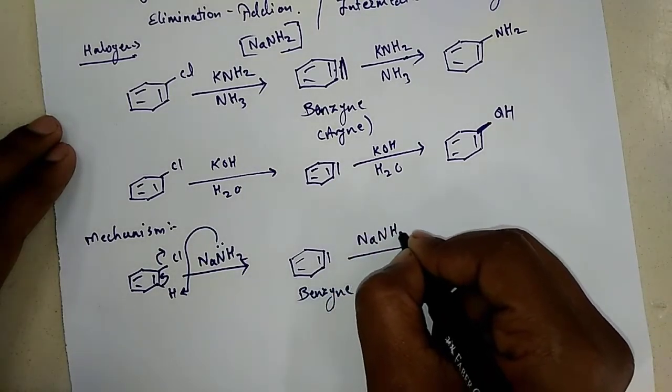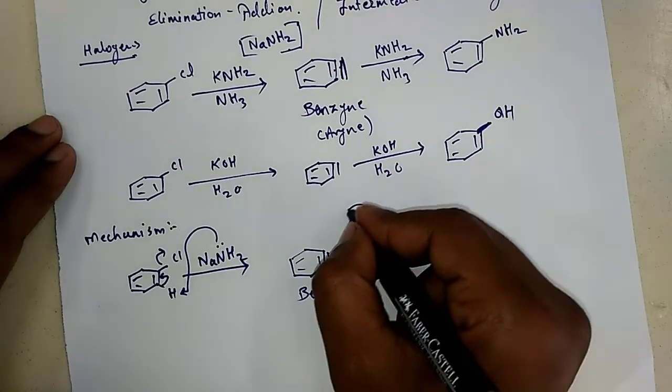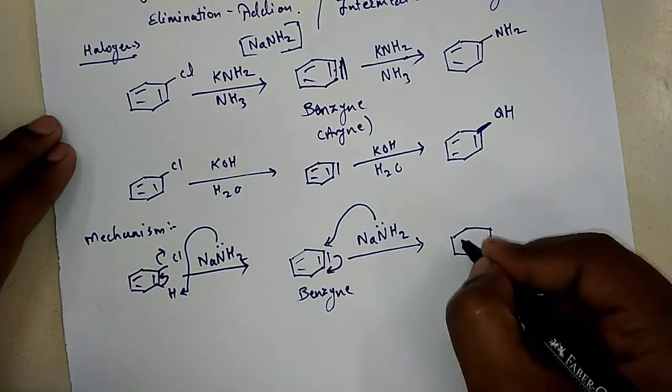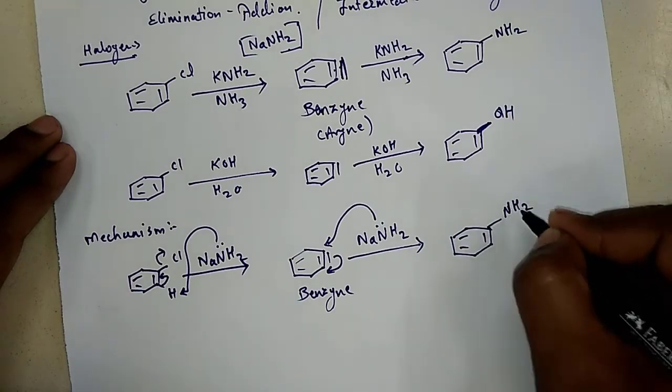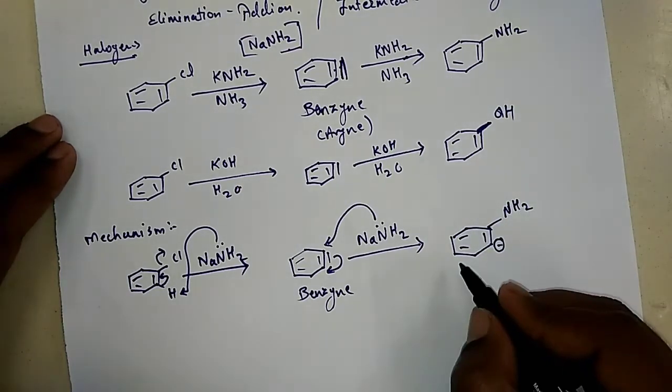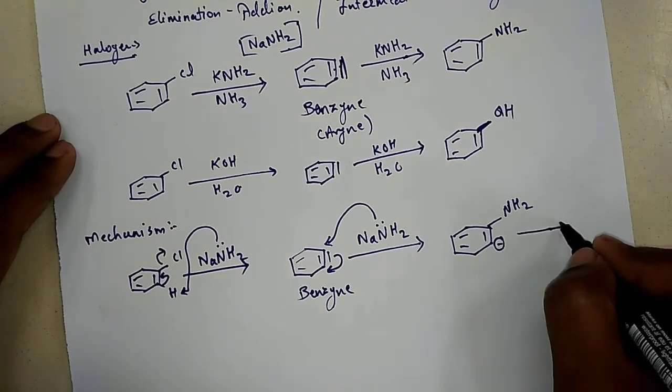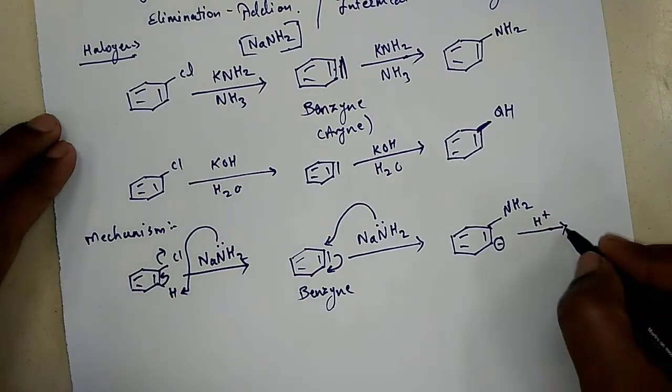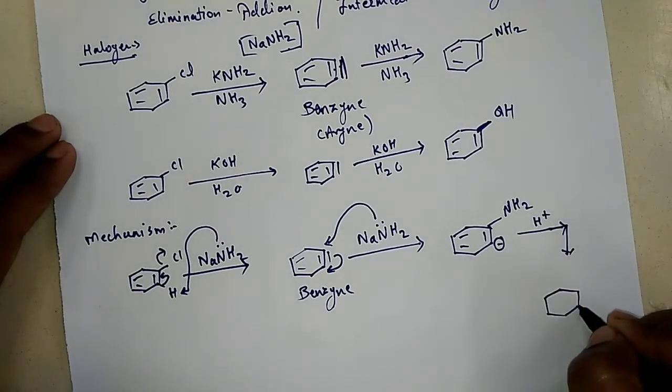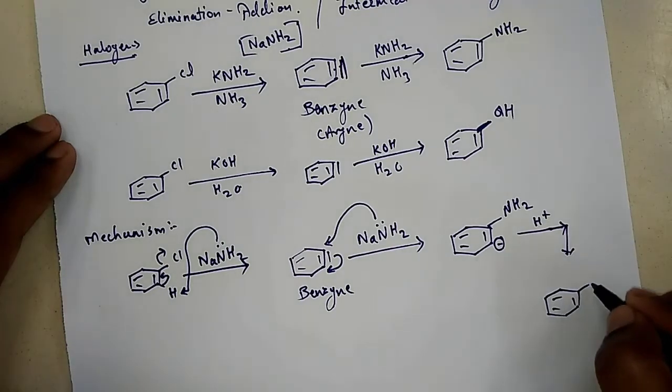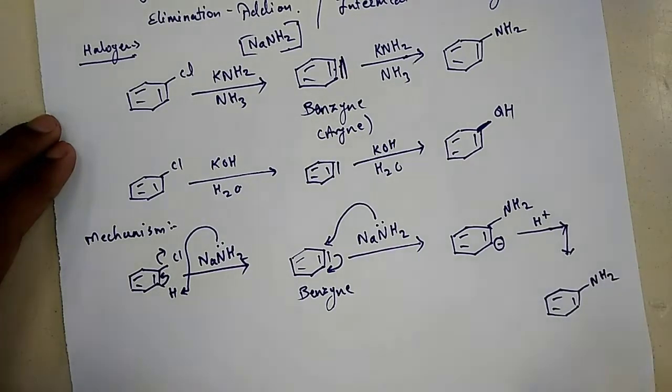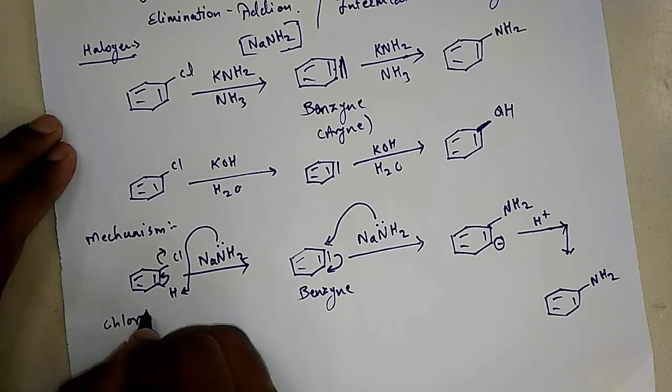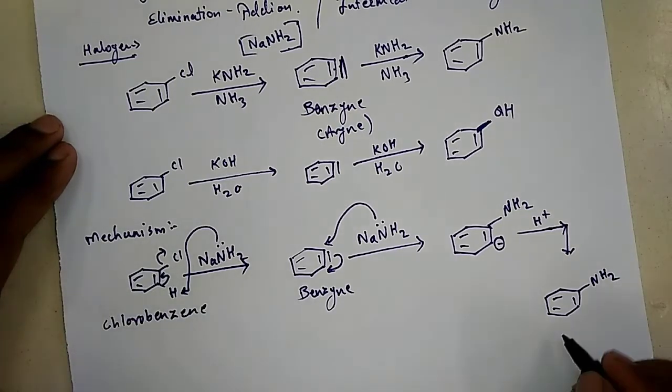And now to this intermediate, another mole of NaNH2 is being attacked. Now this area becomes electrophilic, and hence NH2 here is the nucleophile one and attacks to the carbon and forms a negative charge. And now H+ comes into the picture, which has been thrown off in the last step, and here we get aniline.